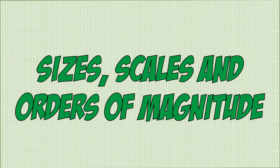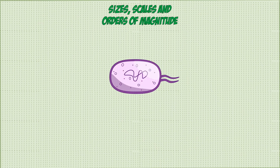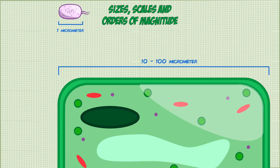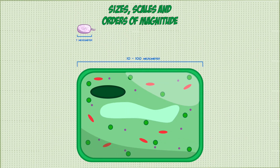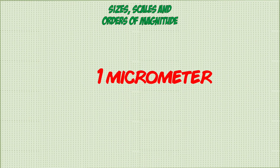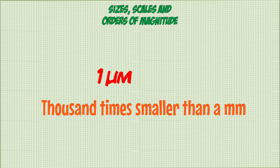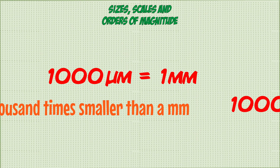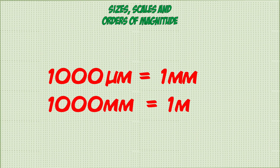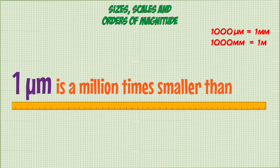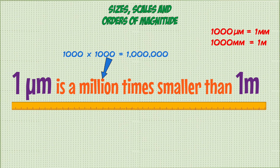So let's get a better appreciation of these sizes and scales. Prokaryotic cells have a tiny size of around one micrometer, whereas eukaryotic cells have a much larger size of around ten to a hundred micrometers. A micrometer, which we use a mu symbol for, is a thousand times smaller than a millimeter. This means a thousand micrometers equal one millimeter, and one thousand millimeters equal one meter. So prokaryotes are a million times smaller than a meter ruler, because a thousand times a thousand is a million.